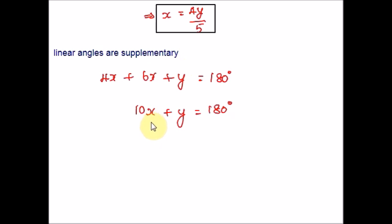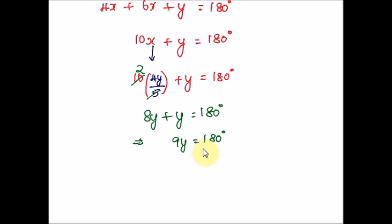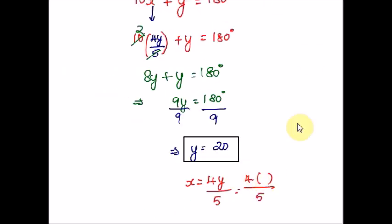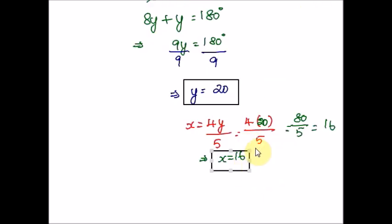Now replace X with 4Y/5 in the equation 10X + Y = 180. Substituting: 10 × (4Y/5) + Y = 180. Simplifying: 8Y + Y = 9Y = 180. Dividing both sides by 9, Y = 20. Now back-substitute Y = 20 into equation 1 to get X. We get X = 4 × 20 / 5 = 16. So X = 16 and Y = 20.